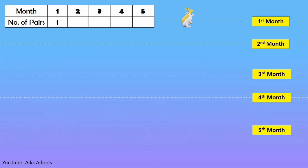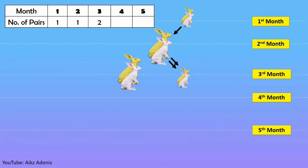We start with the first pair of newborn rabbits at the beginning of the month. Since they are too young to reproduce an offspring, when they get older at the beginning of the second month, we still have one pair. This time the rabbits are old enough to reproduce. At the start of the third month, we will have two pairs.